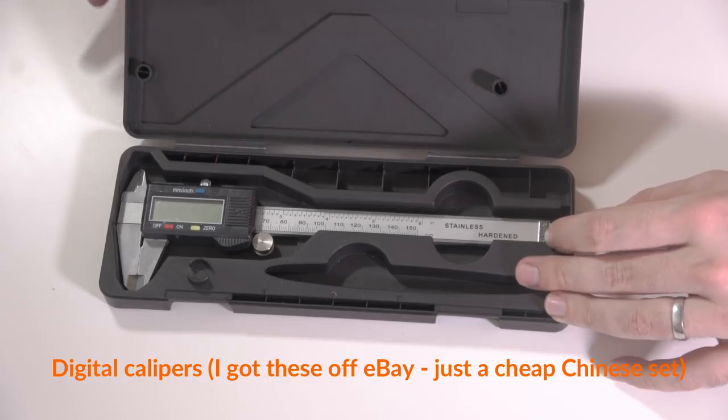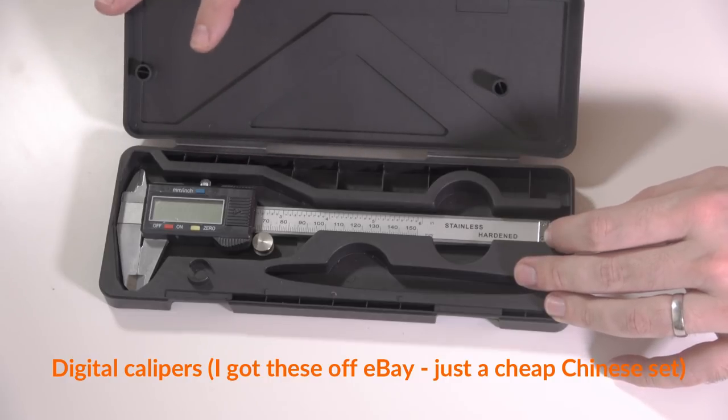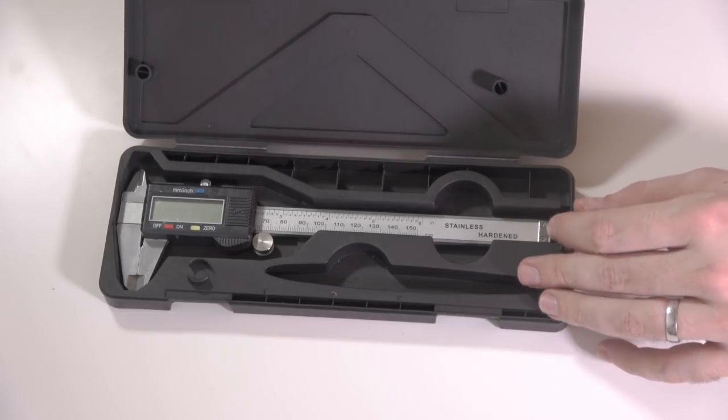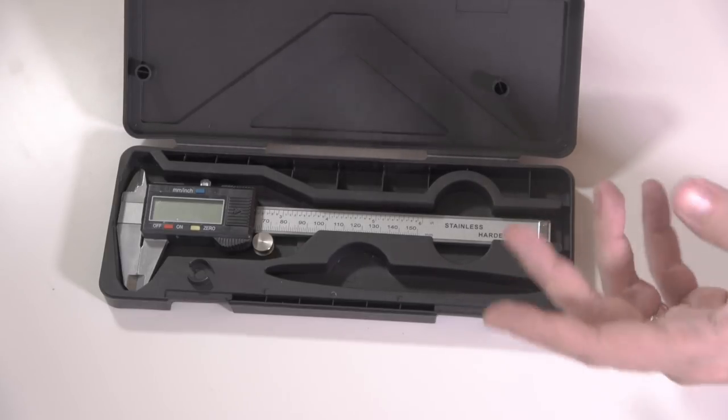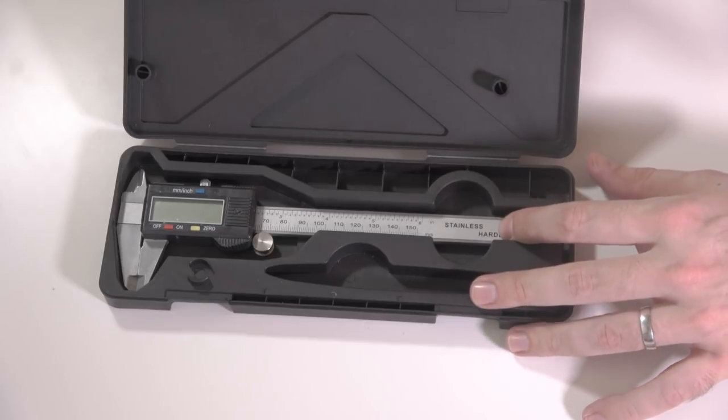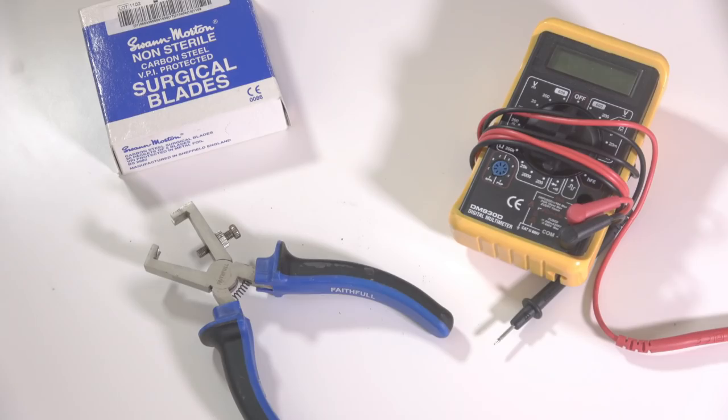And then finally I have a set of digital calipers. These are great for all sorts of things, especially if you're scratch building, but one of the things I use them for quite often is measuring the diameter of brass rod if I've forgotten what it is and I want to check whether it's 0.8 or 0.5. I use these calipers.